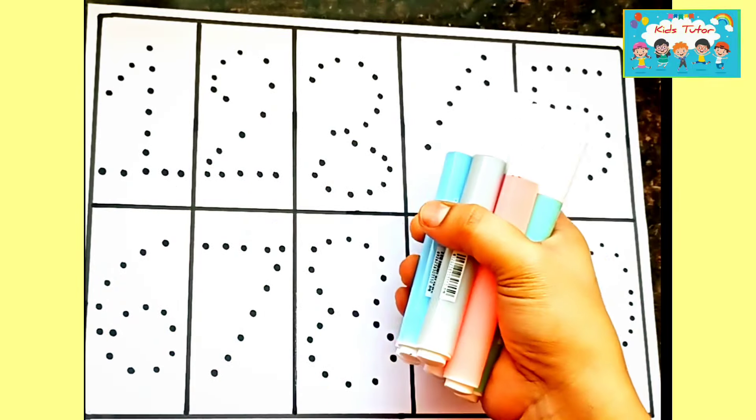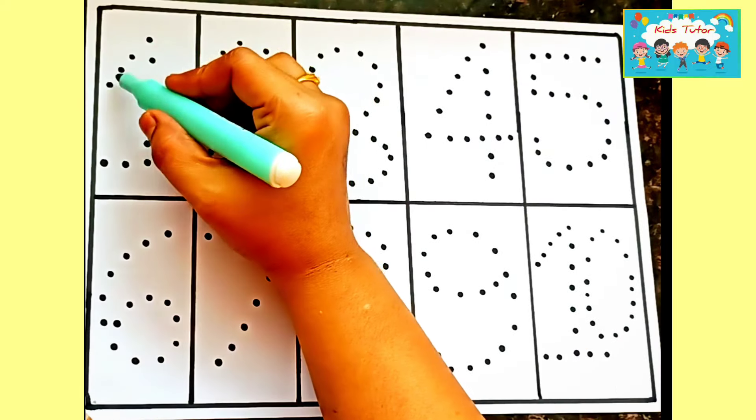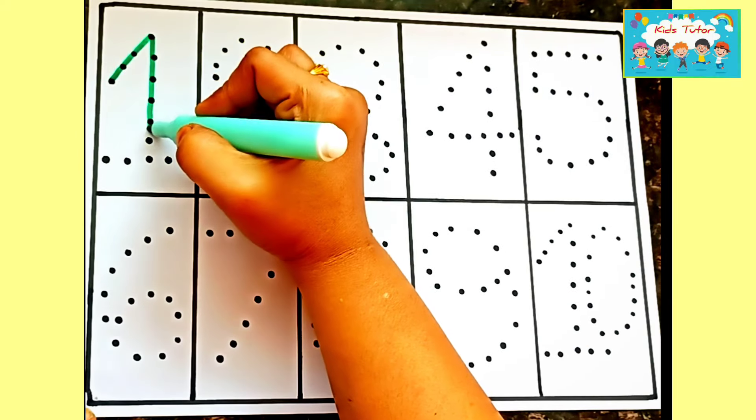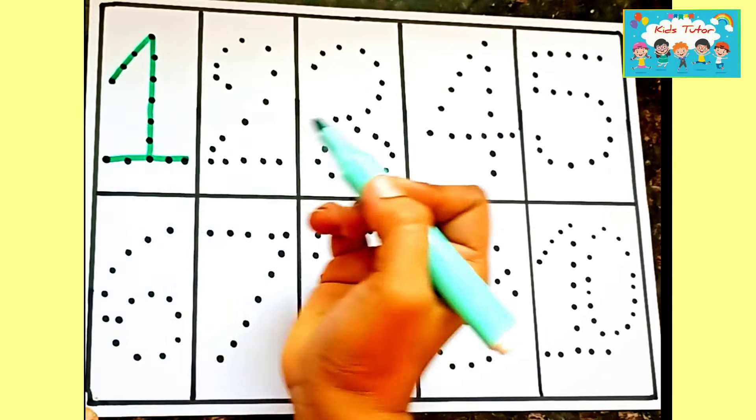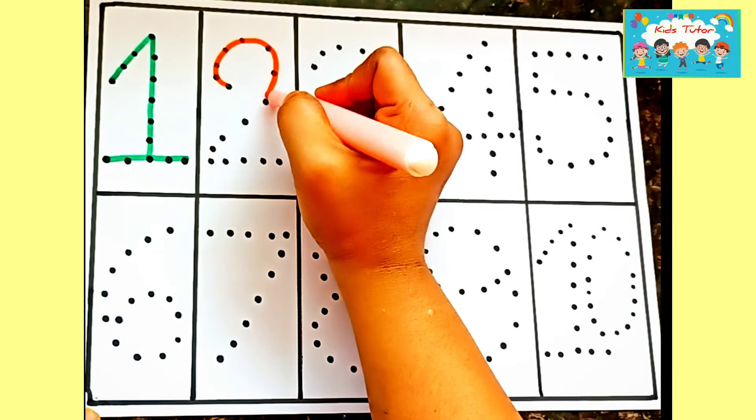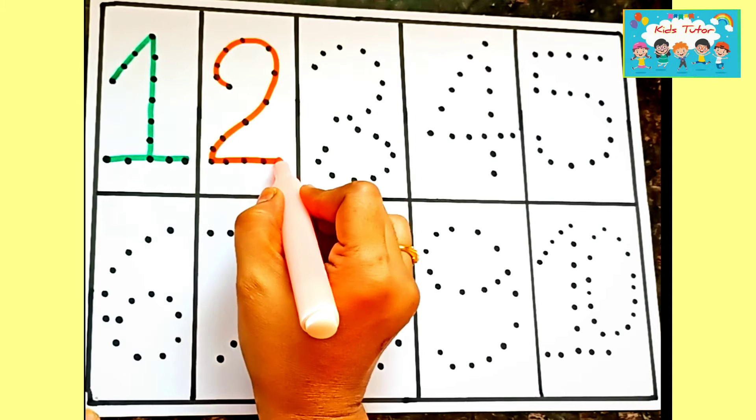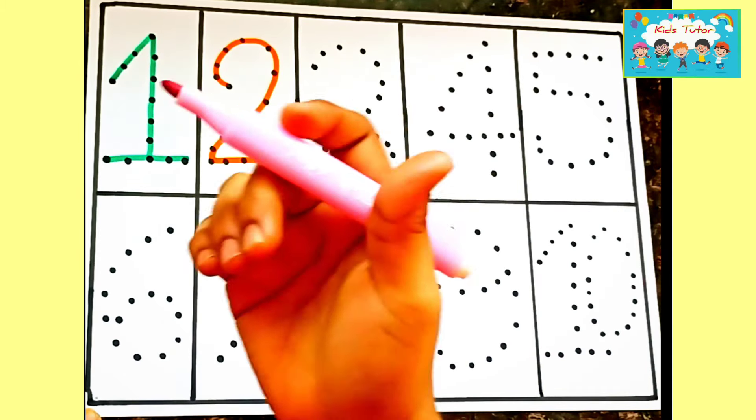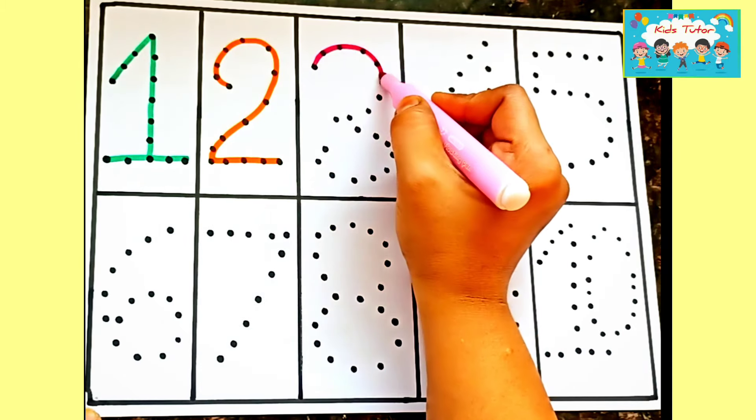Let us start our video. One - let us write one with green color. Two - two with orange color. Three - let us write three with pink color.